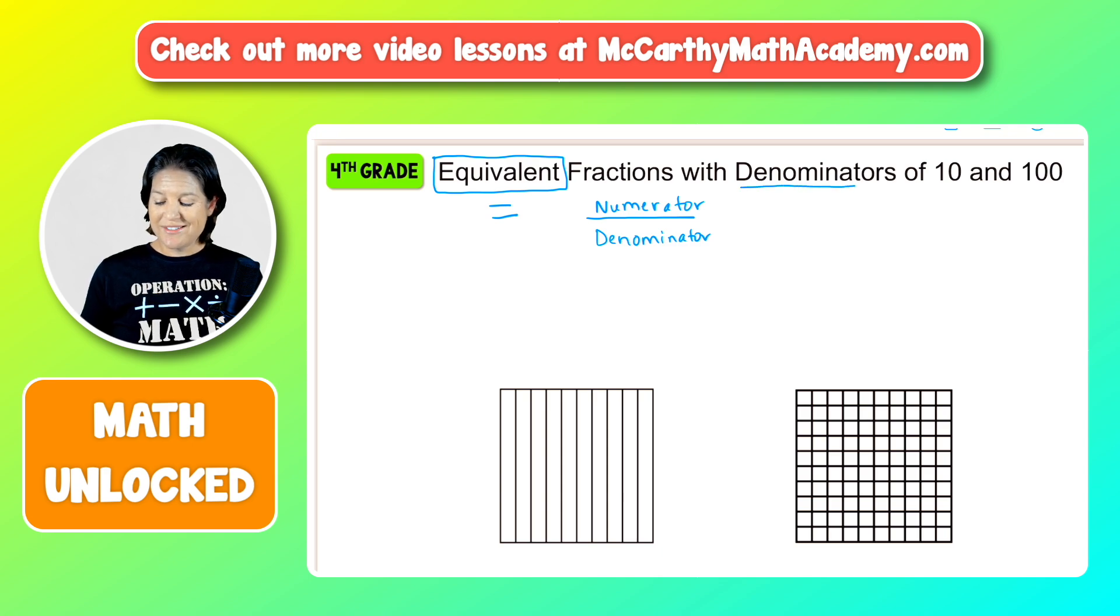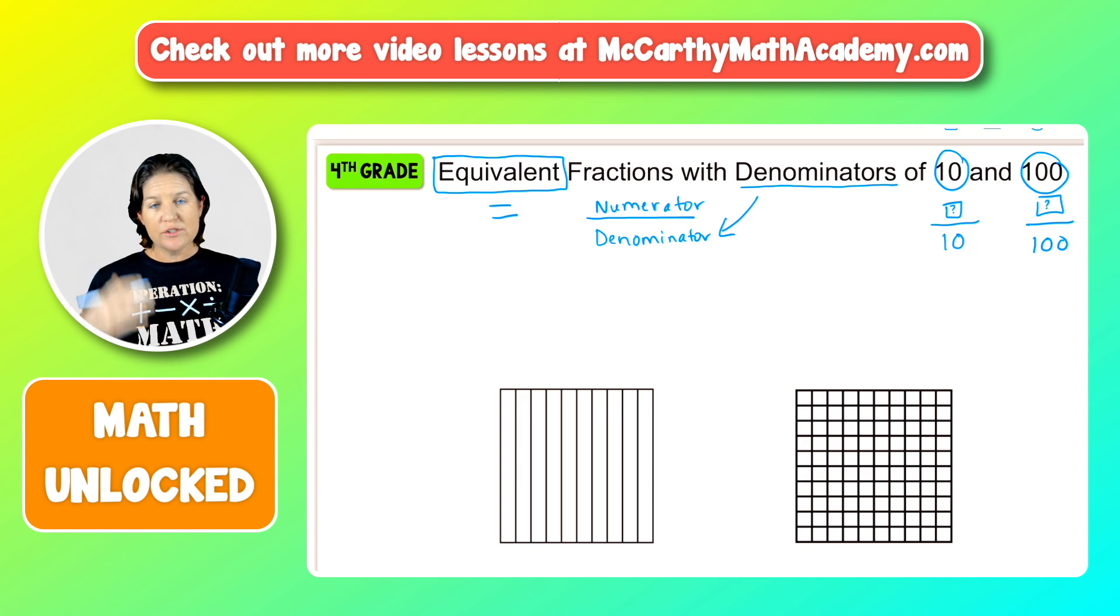We're working today with denominators. That's the one that's down. I remember our denominator is down. Denominators of 10 and 100. So we're going to be working with fractions that have a denominator of 10 and a denominator of 100. All right, so we're just going to do one example today. And if you're looking for more support on this, just stay tuned because I'll point you in the right direction for some more video lessons or some more resources. So you can see I have two different visuals here, right? One of the visuals is broken into 10 equal parts. And one of the visuals is broken into 100 equal parts.